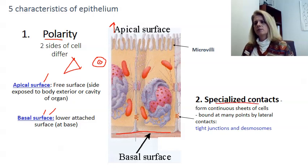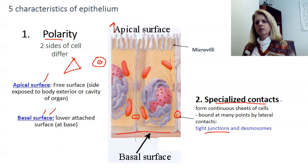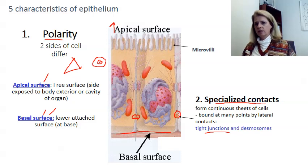Epithelial tissue has specialized contacts that we call tight junctions and desmosomes. These are places where the cells that form the tissue are tightly bound to each other. They keep these sheets of cells continuous, so that your skin and the inside of your mouth remain continuous layers.